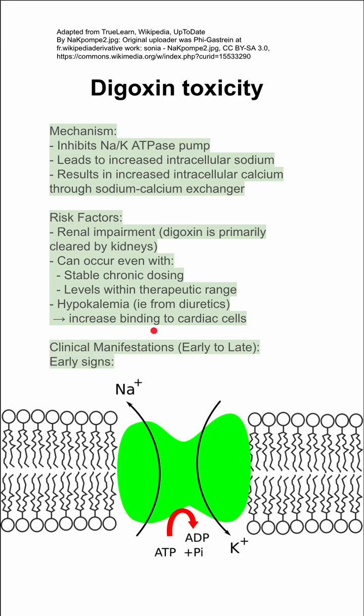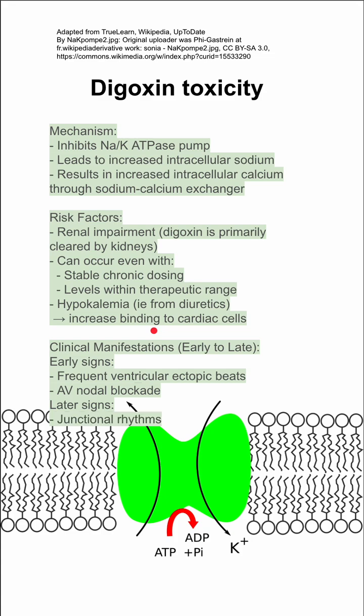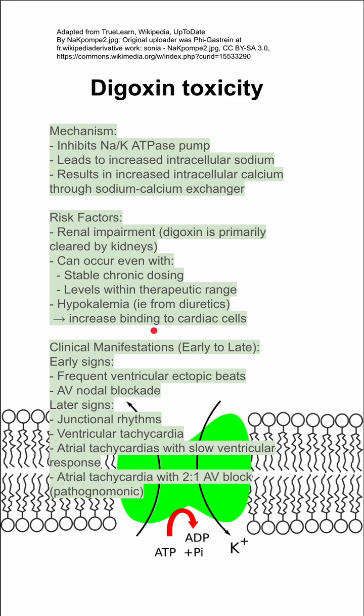There are some clinical manifestations, early to late, for digoxin toxicity. Early signs include frequent ventricular ectopic beats and AV nodal blockade. Later signs include junctional rhythms, ventricular tachycardia, atrial tachycardia with a slow ventricular response, and atrial tachycardia with a 2-to-1 AV block, which is pathognomonic.